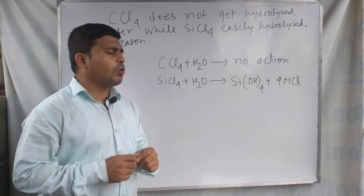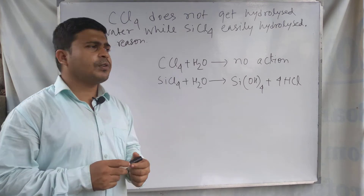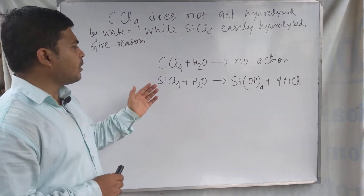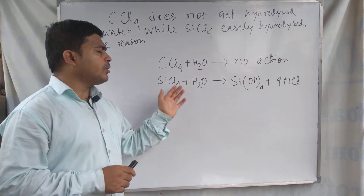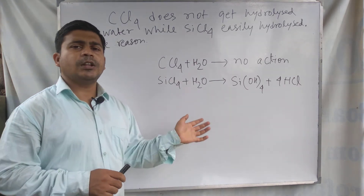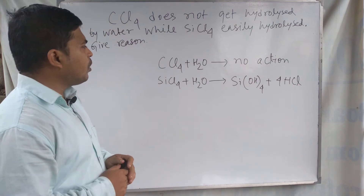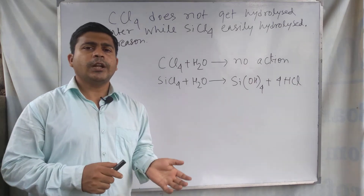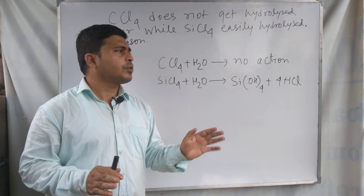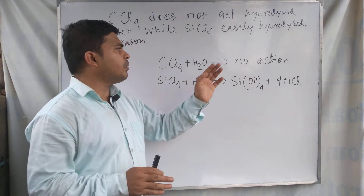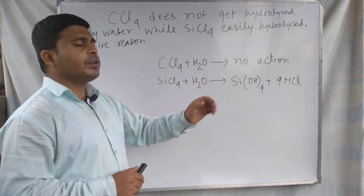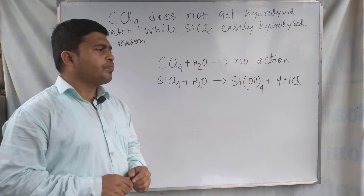The topic of discussion is that carbon halides do not get hydrolyzed, but silicon and germanium halides easily get hydrolyzed. In case of group 14 elements, carbon halides show no reaction in the presence of water, but silicon halides are hydrolyzed in the presence of water.